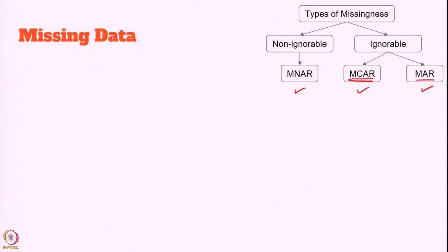MAR is missing at random. The reason for missing values can be explained by a variable on which you have complete information, as there is some relationship between the missing data and other values. For example, in a demographic dataset with gender and age fields, you may observe that females might not have filled in their age — there is a dependency. This dependency comes under MAR.